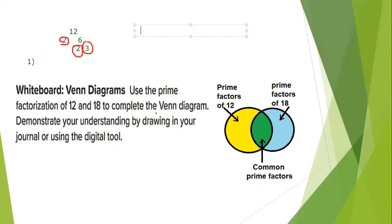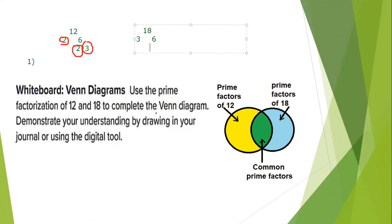Now, how can I get 18? I can get 18 by multiplying, for example, 3 by 6, or 2 times 9. 3 is a prime number but 6 is a composite number. How can I get 6? By multiplying 2 times 3.